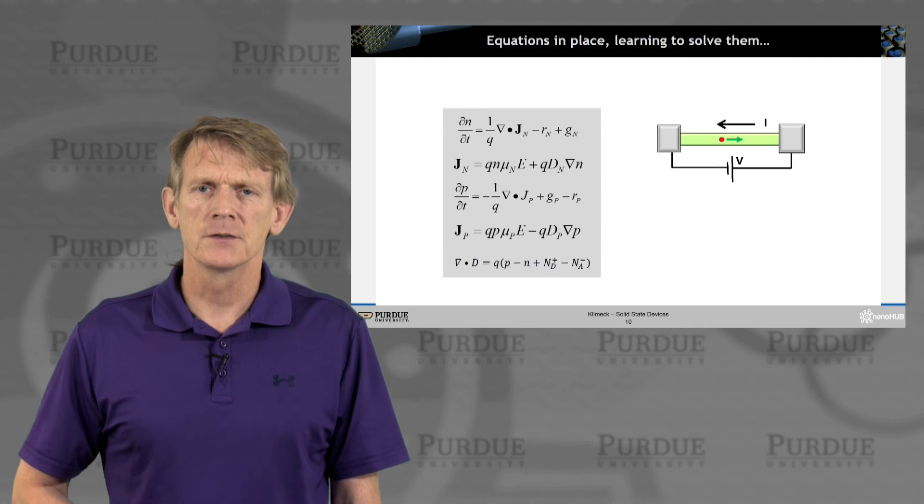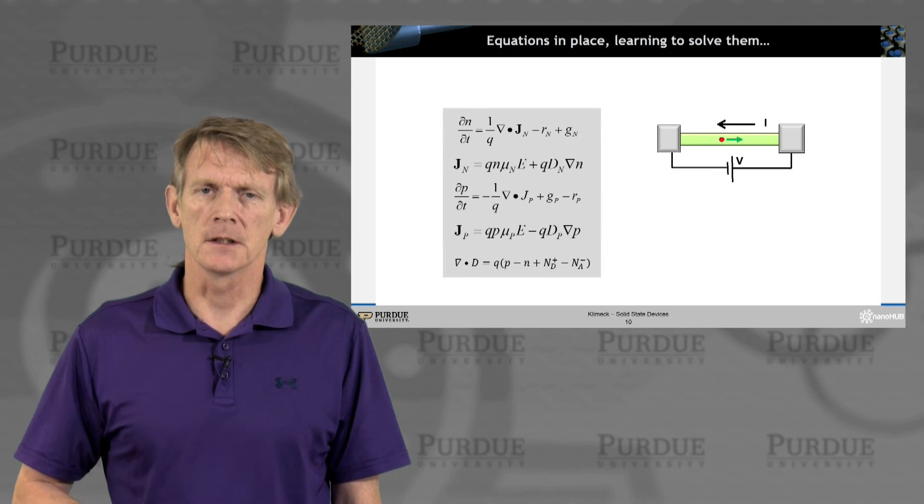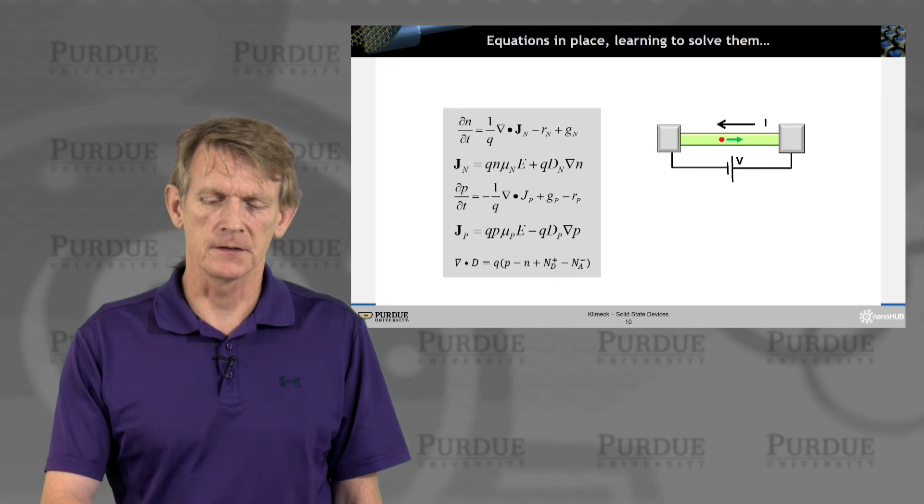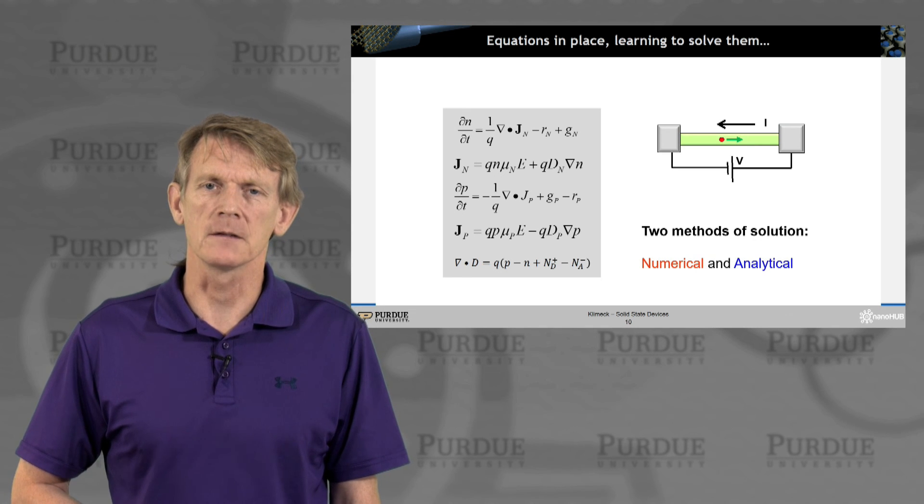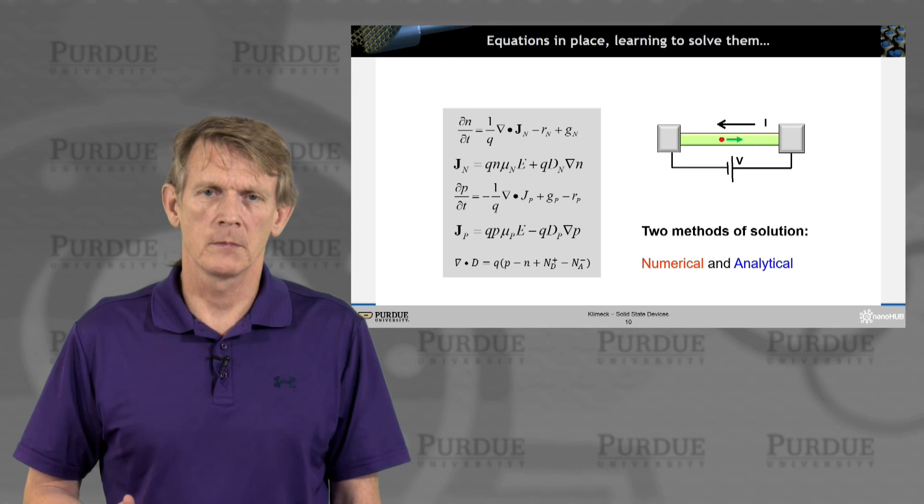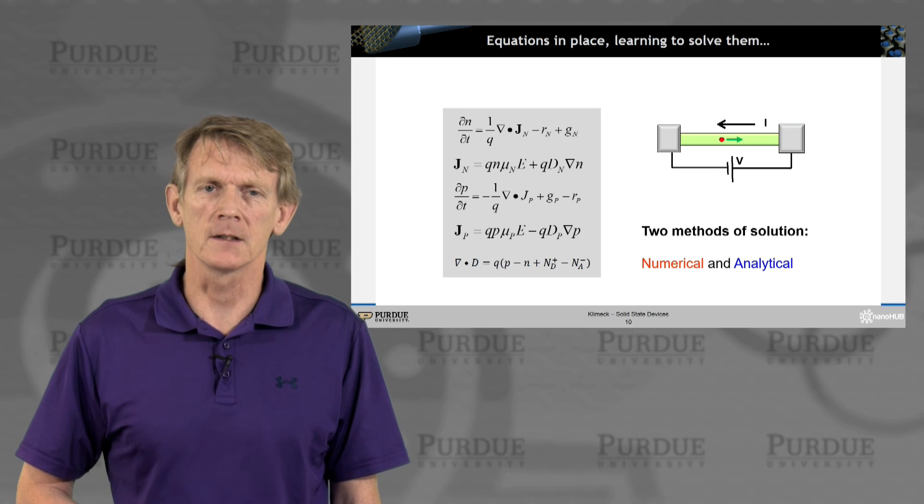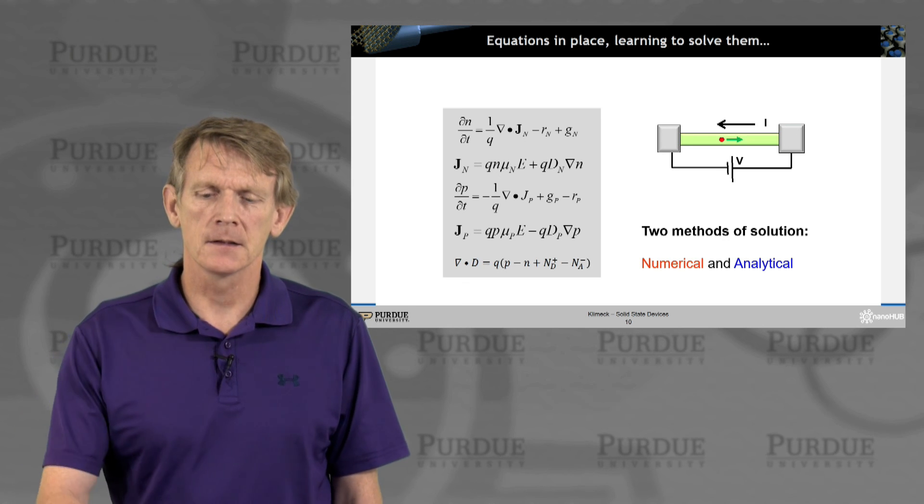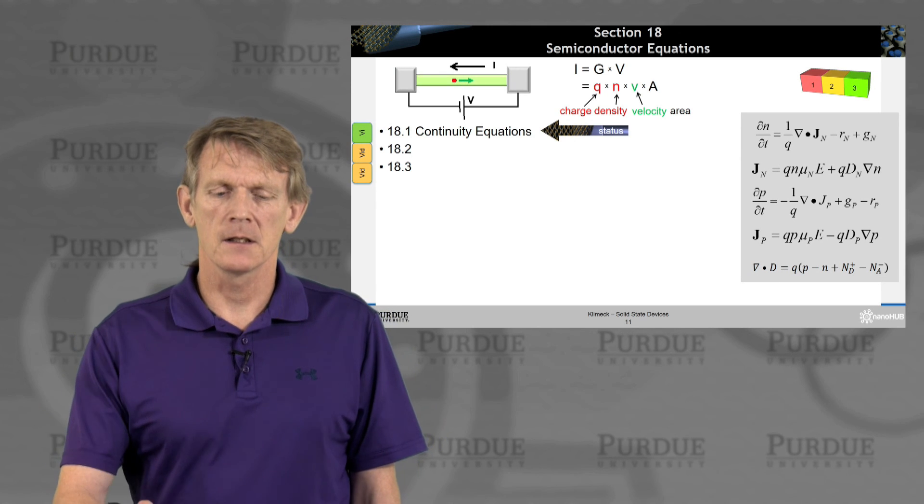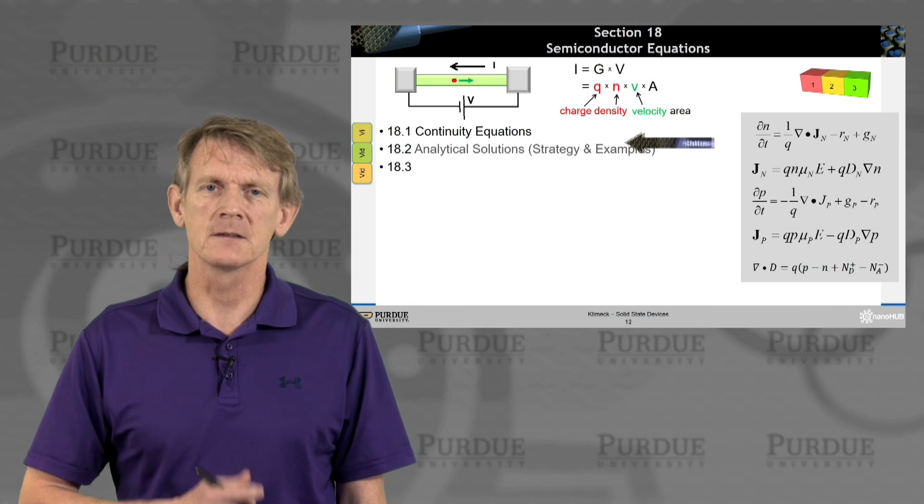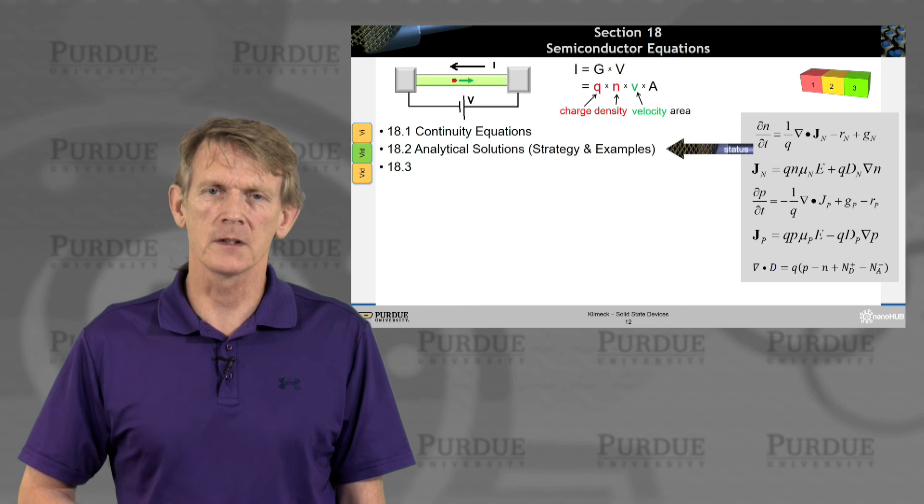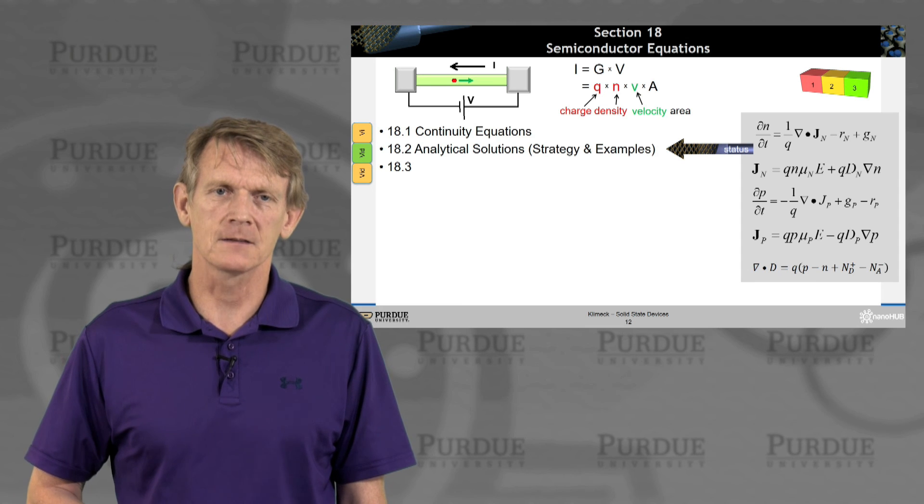All right. So, here they are, the equations we had just discussed. Now we have them in place. Now we're going to have some strategies of solving them. There's really two methodologies, one numerical and one analytical. And we'll use the, in the next section, analytical approaches to solve these expressions, and to give you some insight as to how to solve these expressions, and what insights you can gain on the overall behavior of electrons in such devices. So I'll see you at the next section.